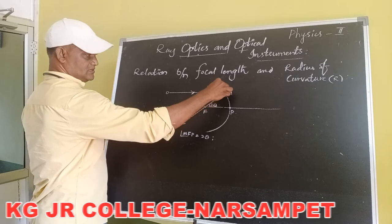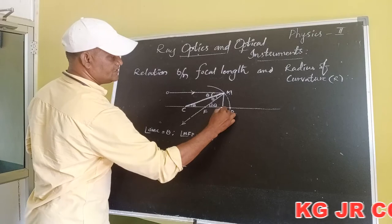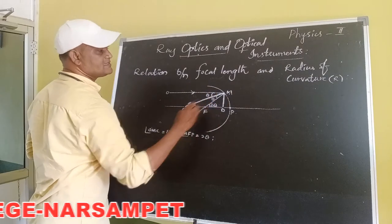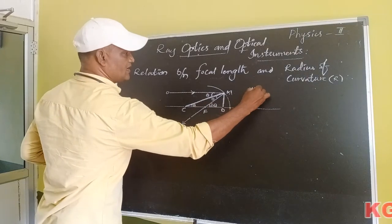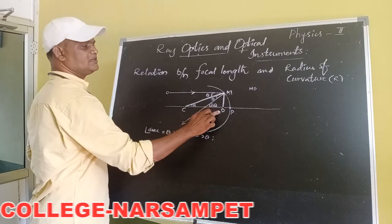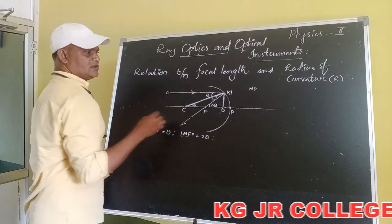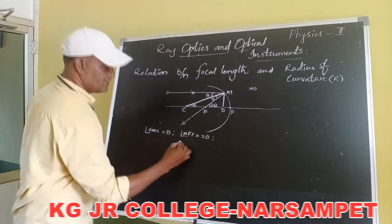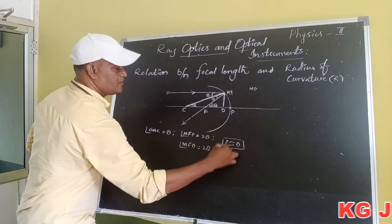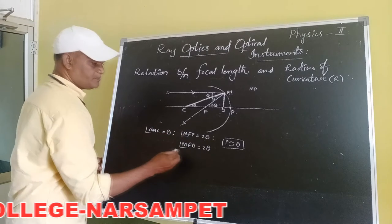We now draw a perpendicular from M to the principal axis at point D, so MD is perpendicular to the principal axis. The distance between D and P is very negligible, so D and P are considered the same point. Therefore, angle MFD is also considered as 2 theta, because the distance between P and D is negligible, so angle MFP equals 2 theta and angle MFD is also 2 theta.